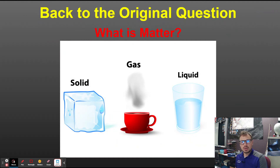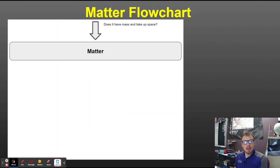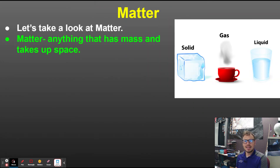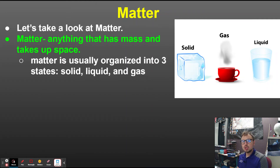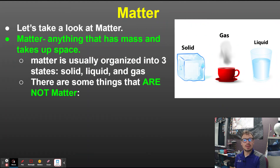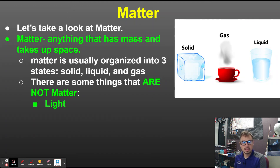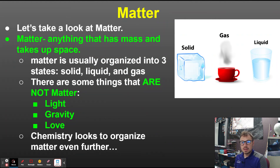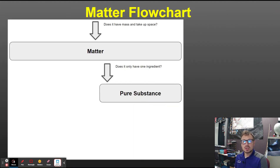Let's ask this question: what is matter? We're going to put together this flow chart, which should be on a page in your notebook. If you ask yourself 'does it have mass and take up space?' — then it's matter. Matter is anything that has mass and takes up space, and is usually categorized into three states: solid, liquid, and gas. Some things are not matter — light doesn't have mass or take up space, gravity doesn't, and love doesn't either.